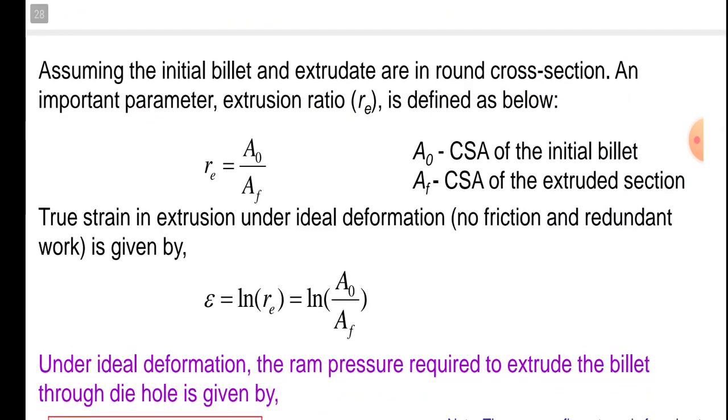Assuming the initial billet and extrudate are in round cross section. An important parameter, extrusion ratio Re, is defined as below: Re equals area of initial billet upon area of extrudate section. A0 is the cross sectional area of initial billet.